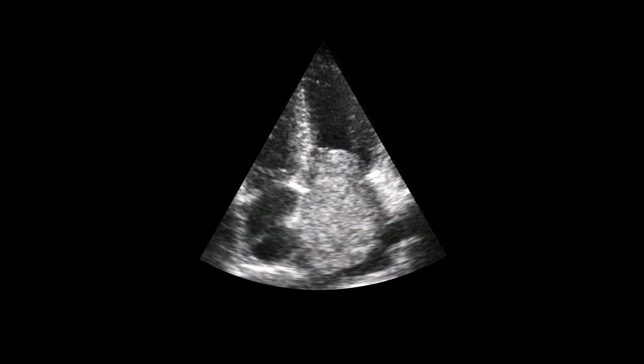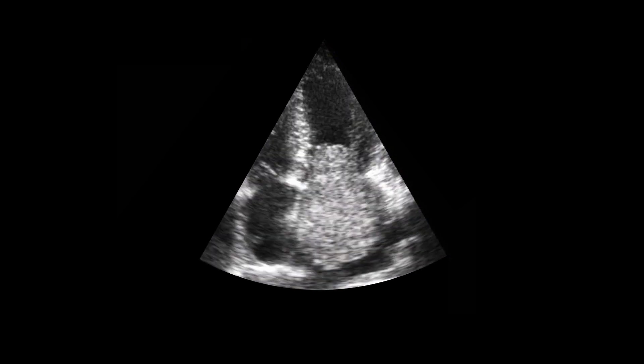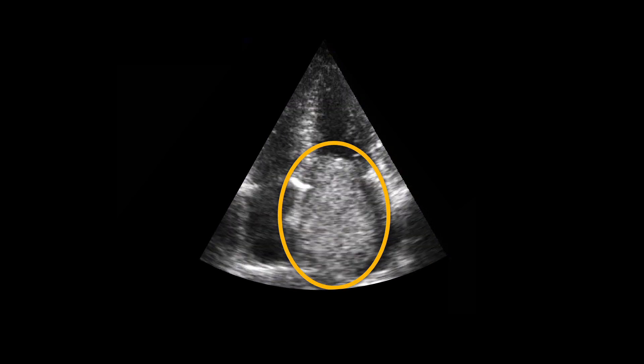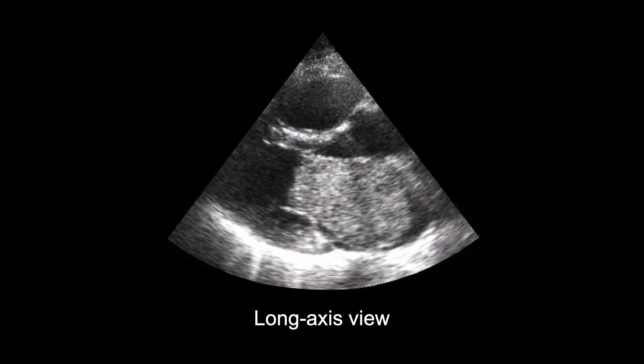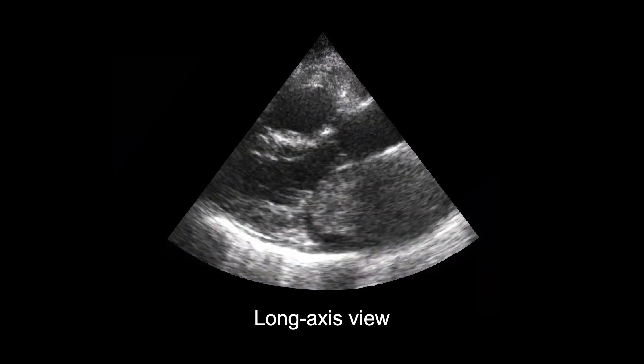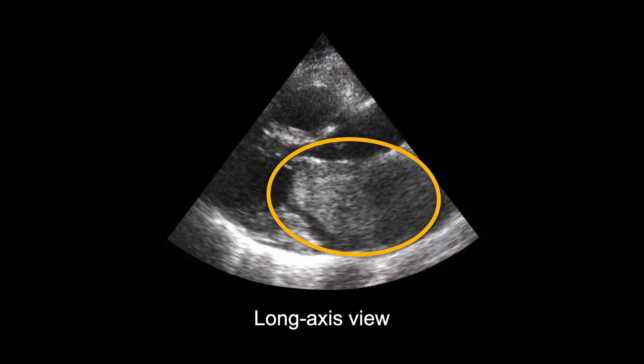Abnormal masses can also develop in the left atrium. 2D echo only provides limited views of left atrial masses. Here we see the full chamber view. Here we see the long axis view. It often does not allow a clear visualization of the insertion point of the mass.